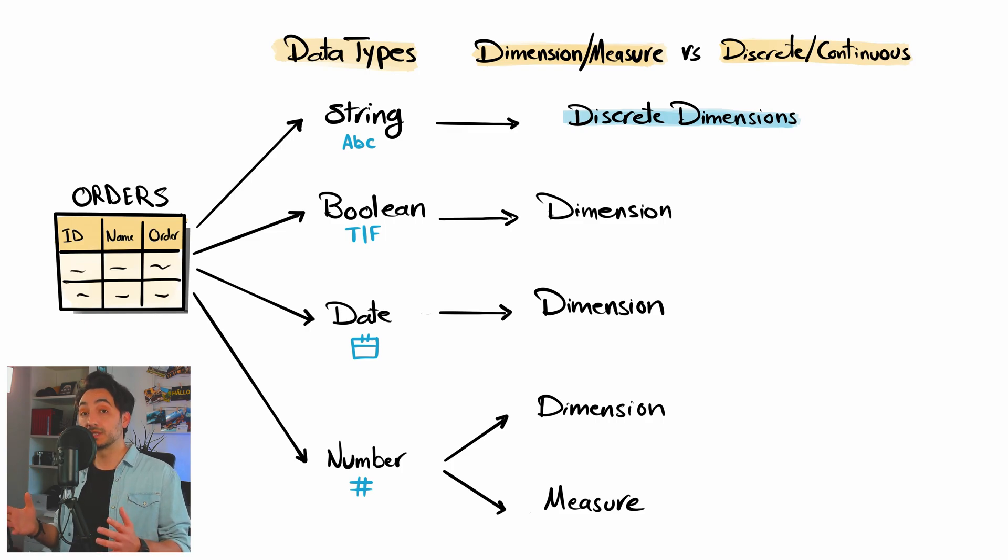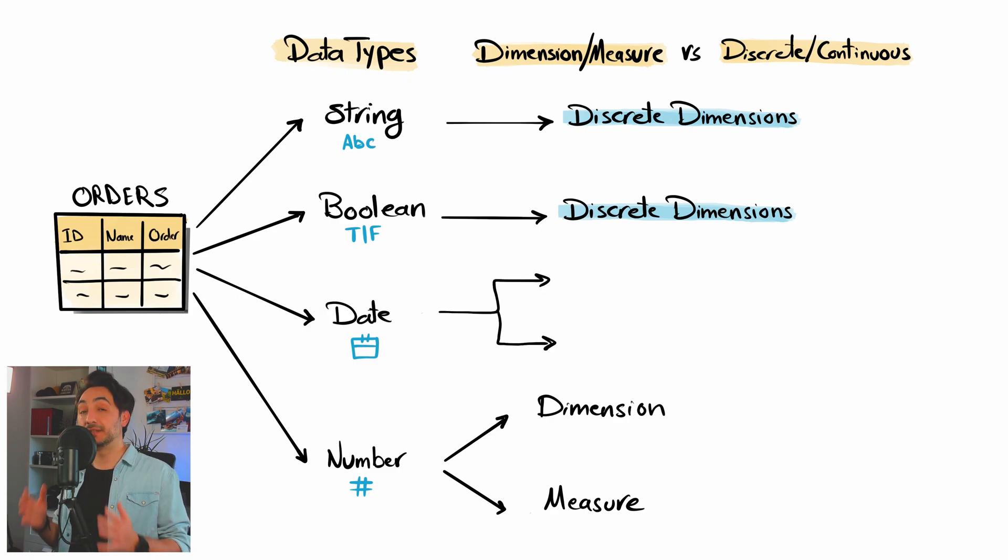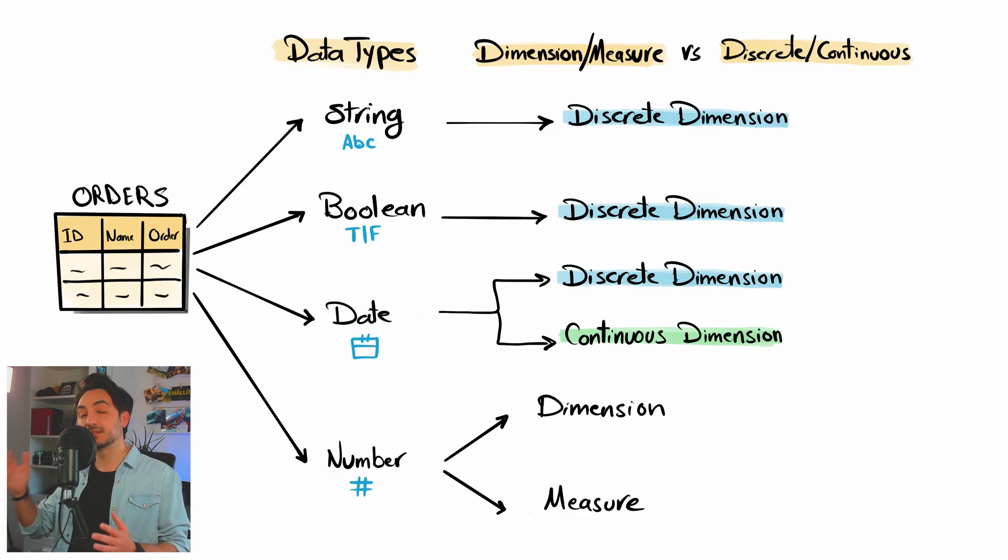You cannot change it to anything else. The same goes for the data type boolean. It could be only dimension and only discrete. But now if we have a dimension field with the data type date or datetime, as you saw in our examples, it could be continuous or discrete. We can have both.